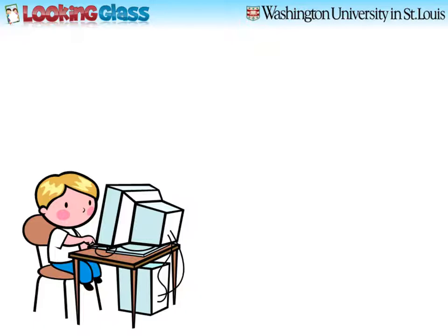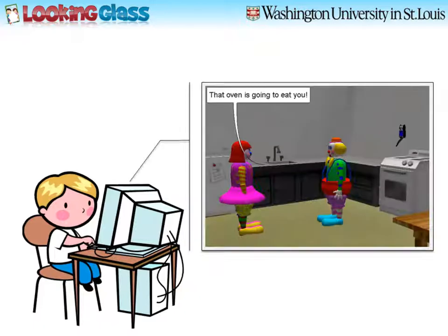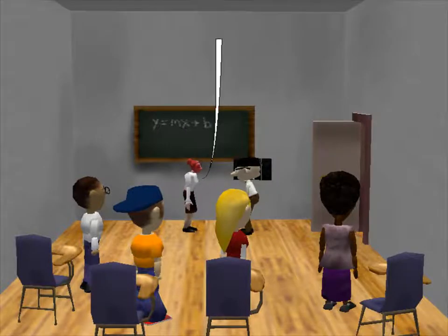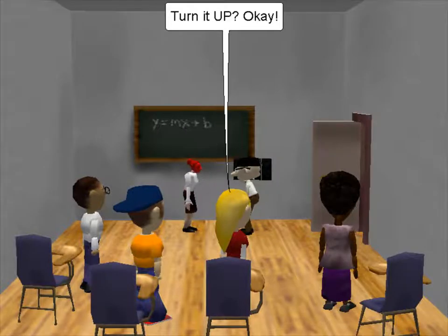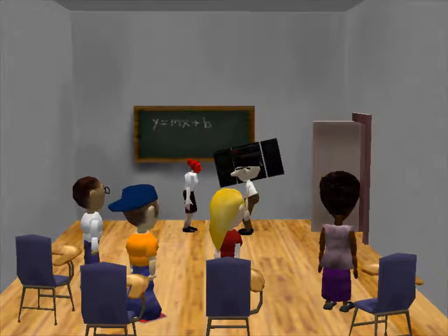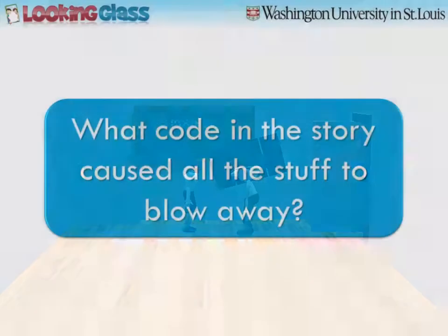Imagine you're a middle school kid whose friends are programming stories, but you don't know how. You want a story with an explosion that blows everything away, and you find this school story on the web. What code in the story caused all the stuff to blow away?